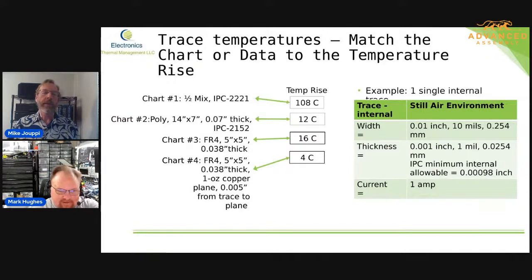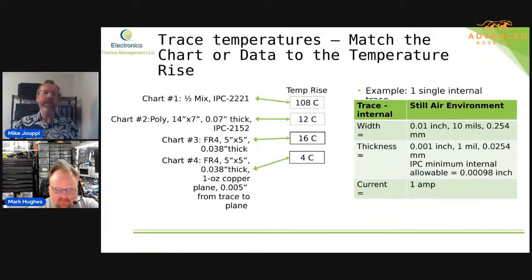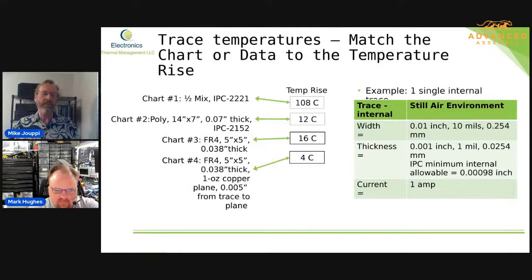The thing that is difficult there is that if you don't know the history behind these design charts, you wouldn't know that the design chart for internal traces in IPC-2221 is just half the current from the external trace chart — it's not from data that was collected. That had the whole community really confused for a long time until it surfaced through the research we did, finding the original data and also comparing it with the equations being used to define the 2221 charts. You'll see a factor of 0.5 on them and the same equation, so it's pretty obvious once you take a look at them.